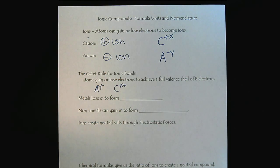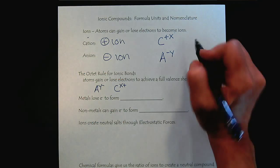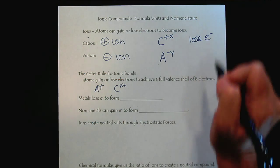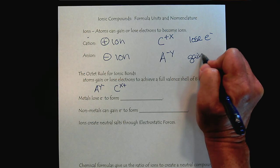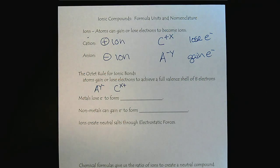It's that kind of counterintuitive effect we have because electrons are negative. So cations form by losing electrons and anions form by gaining electrons.